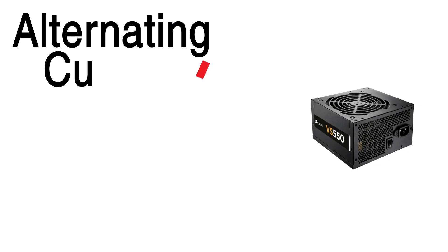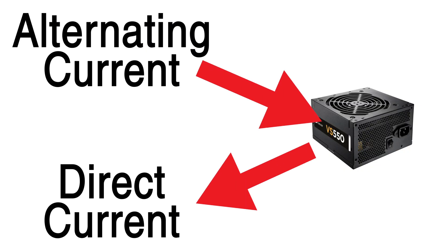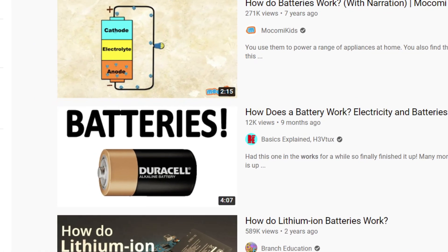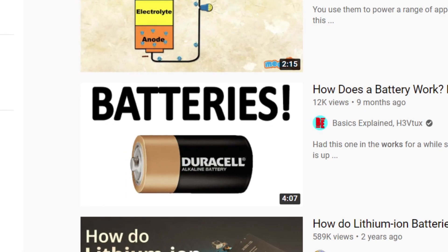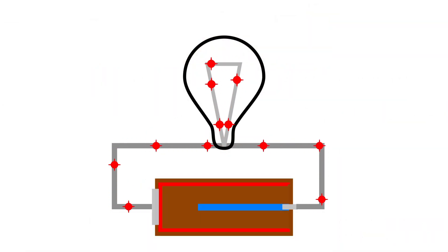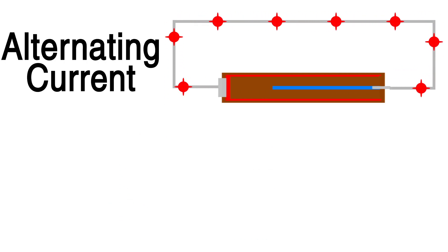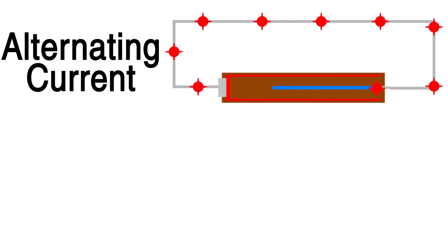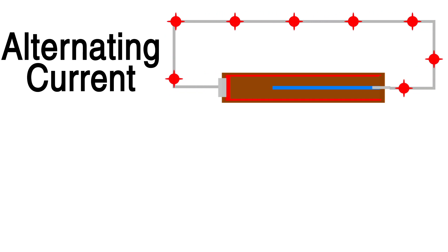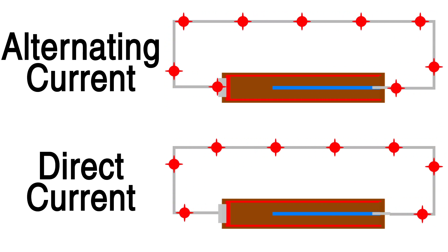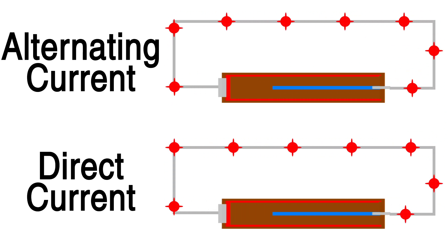The first thing a power supply does is convert alternating current into direct current. If you want to know a bit more about electricity, you can check out my video on how batteries work, but for now all you need to know is that electricity is the flow of electrons. Alternating current is when these electrons flow back and forth like water sloshing in a bathtub, while direct current is when the flow stays in one direction like a river.